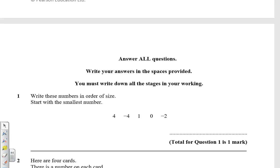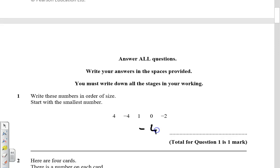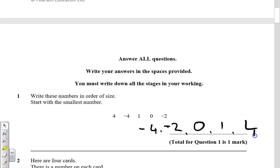Write these numbers in order of size. Start with the smallest number. The smallest number will be the biggest negative. So we start with minus 4, then just think of your number line — minus 2, then 0, 1, 4...